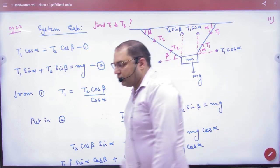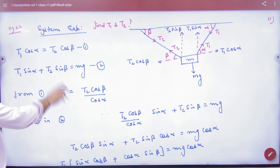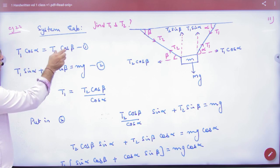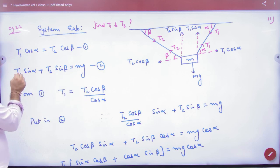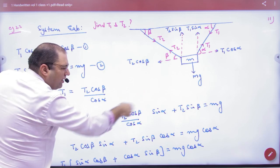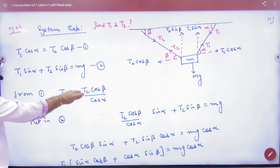So there are two equations. You have to solve for T1 and T2. So you can solve T1 cos alpha, take this T1 cos alpha and keep it here. So you have this equation. Look, the whole equation is T2 cos alpha. So remove T1 cos alpha in terms of T2.